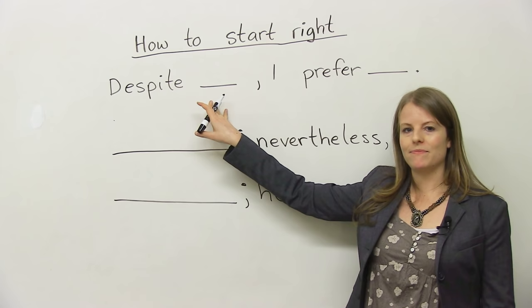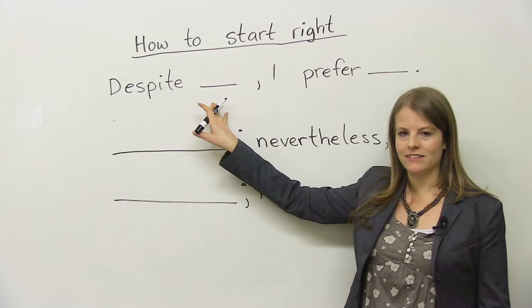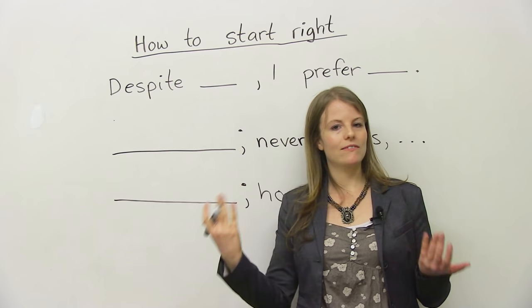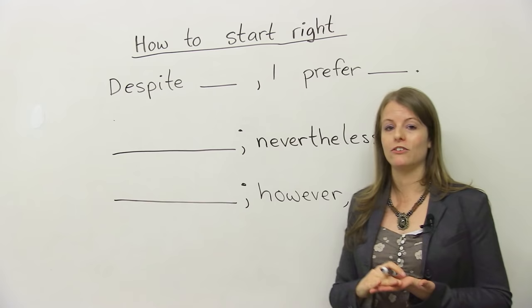Despite the advantages of living in the country, I prefer living in the city. Despite the calm of the country, despite the peace, the peacefulness of the country, the quiet of the country, I prefer the city. So again, this is a great way to start either in an essay or when you're giving an answer for TOEFL and IELTS. It's a great way to do this.